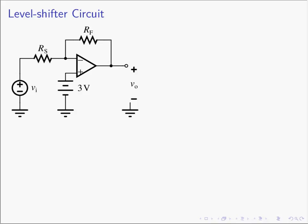How we're going to solve this is by applying the concept of superposition. The output voltage Vout can be found by seeing what Vout is due to the 3-volt source all by itself, then finding Vout due to the VI source all by itself, and adding them together. So let's kill the VN source — make it a zero-volt source — which effectively grounds that point.